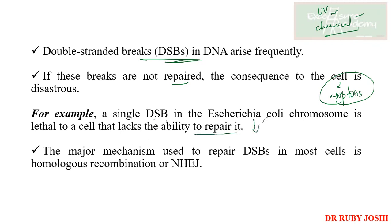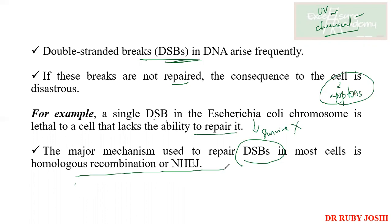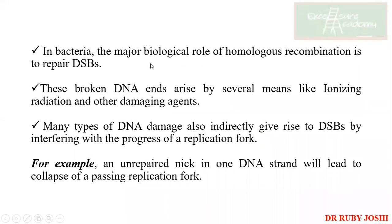So what does it mean? It means that the E. coli cell is not going to survive. The major mechanisms used to repair double-strand breaks in most cases are non-homologous end joining or homologous recombination. This we have discussed in our previous chapter. So this is about non-homologous end joining.